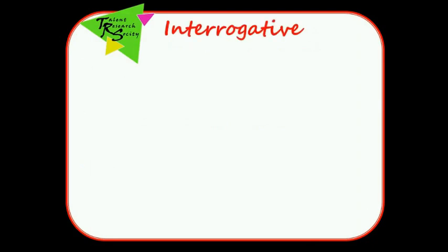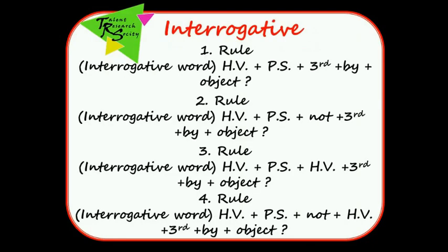Interrogative rules: Rule 1 — HV plus PS plus third form plus BY plus object. Rule 2 — HV plus PS plus NOT plus third form plus BY plus object. Rule 3 — HV plus PS plus HV plus third form plus BY plus object. Rule 4 — HV plus PS plus NOT plus HV plus third form plus BY plus object.